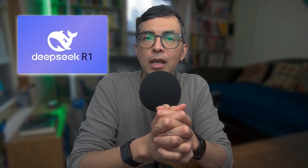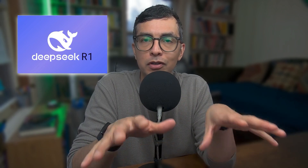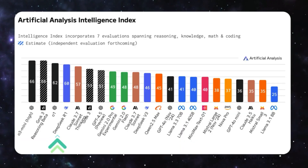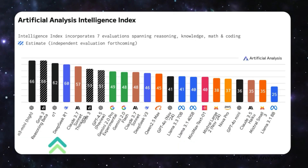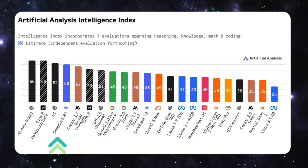DeepSeek's R1 took the AI world by storm when it dropped earlier this year in January — that was six weeks ago — but it is still the top open source rival to models from giants like OpenAI and Google. Open source means more privacy, greater control, and lower inference costs.